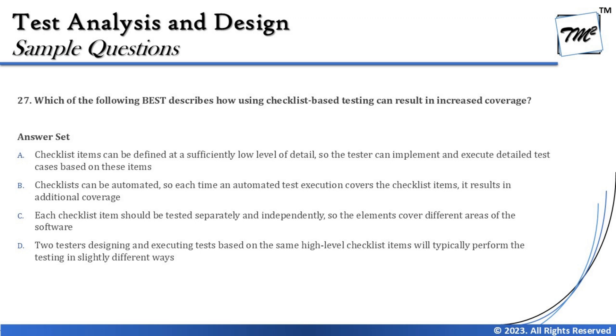Option A says: checklist items can be defined at a sufficiently low level of detail so the tester can implement and execute detailed test cases based on these items. This can be cut off immediately — checklist-based testing is an experience-based technique that operates at a high level, not low level. It does not use detailed test cases; instead it uses high-level questionnaire items or things to be checked, so option A is invalid.